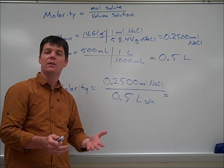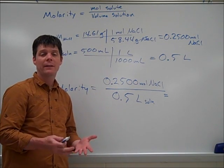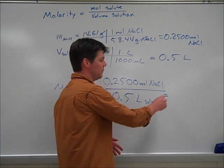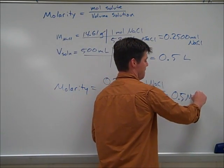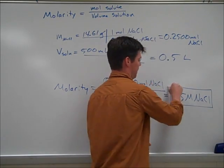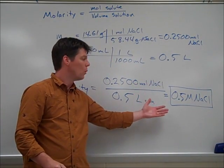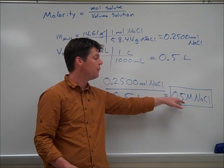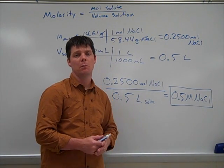The unit is capital M, so we write the answer as 0.5 M NaCl. This indicates a concentration of 0.5 molar sodium chloride.